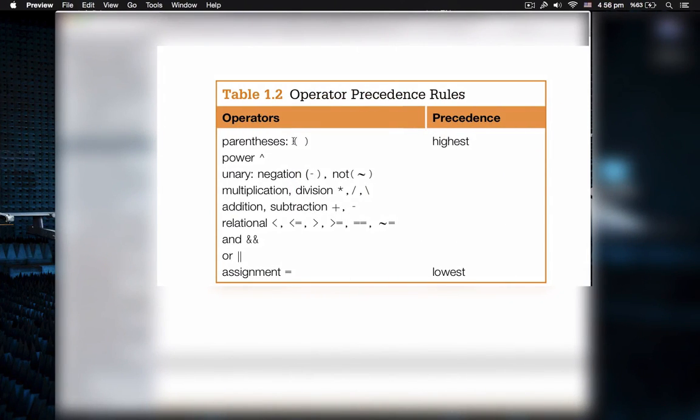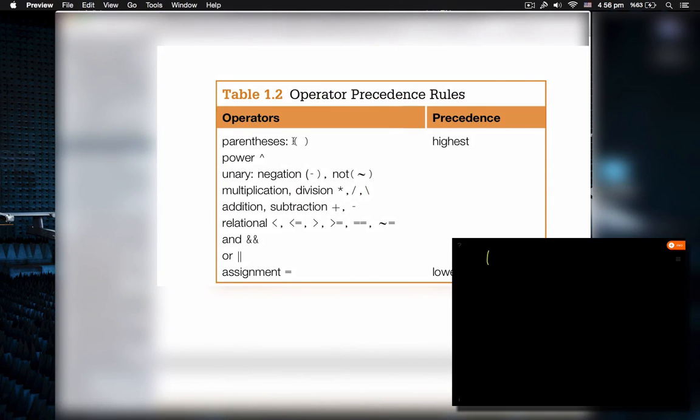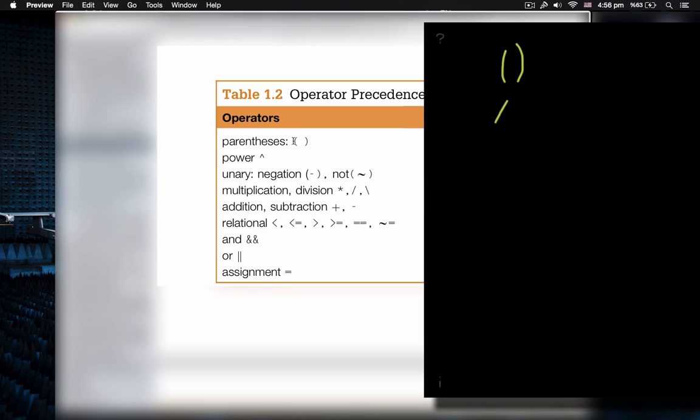Okay, so the first thing is parentheses, right? It is the first thing. Its precedence is the highest. The second one is exponentiation, the power of something like 2 to the 5, which is equal to 32.